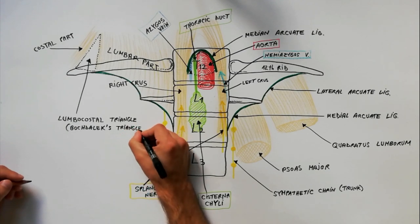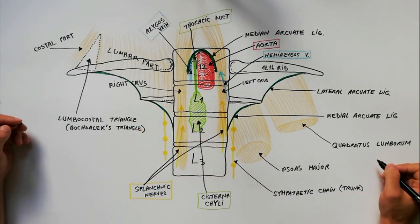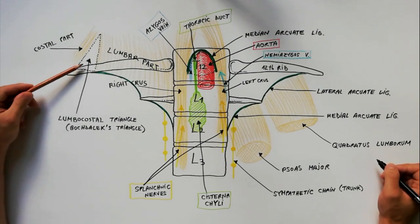Furthermore, the existence of this space might cause a congenital diaphragmatic hernia called the Bochdalek hernia.